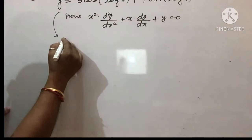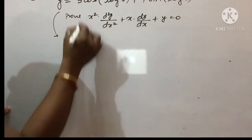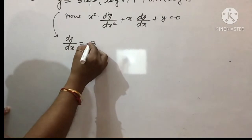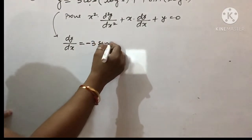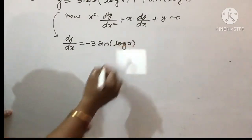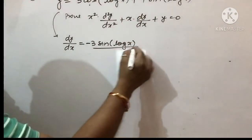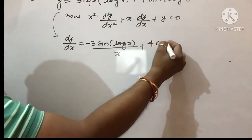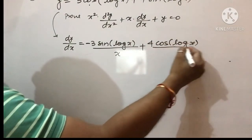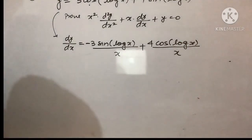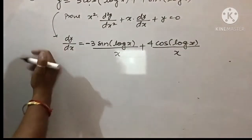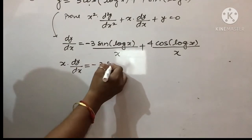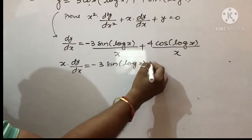Vaapas se wahi kaam humara — humne differentiate karna shuru kiya. Toh ye hua bachon: dy/dx = 3·(-sin(log x))·(1/x) + 4·cos(log x)·(1/x). Chain rule lagana hai toh log x ka differentiation one upon x, so: dy/dx = [-3·sin(log x) + 4·cos(log x)] / x. Ab meri wahi step — question quotient rule se bachna hai — x ko LHS mein leke aao: x·dy/dx = -3·sin(log x) + 4·cos(log x).